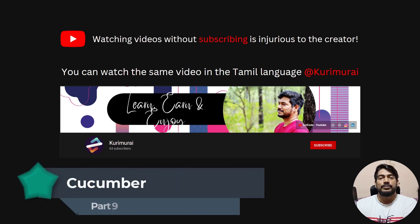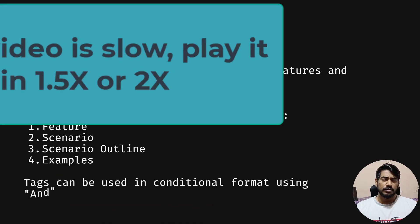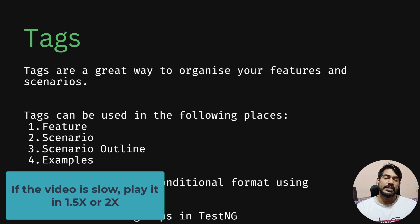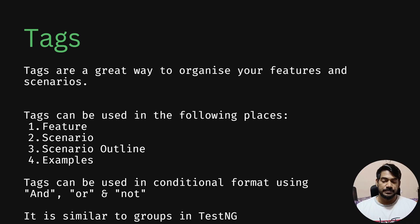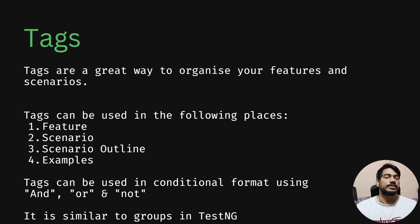Hello guys, my name is Kaushik and welcome back to LeetCode. In this video we are going to learn about the Cucumber tags concept. Cucumber tags is very easy — it is a great way to organize your features and scenarios. We can use this in several places like on top of the feature keyword, scenario, scenario outline, or also the examples. Tags can be used in conditional format like AND, OR, or the NOT condition. It is similar to the grouping concept in TestNG.